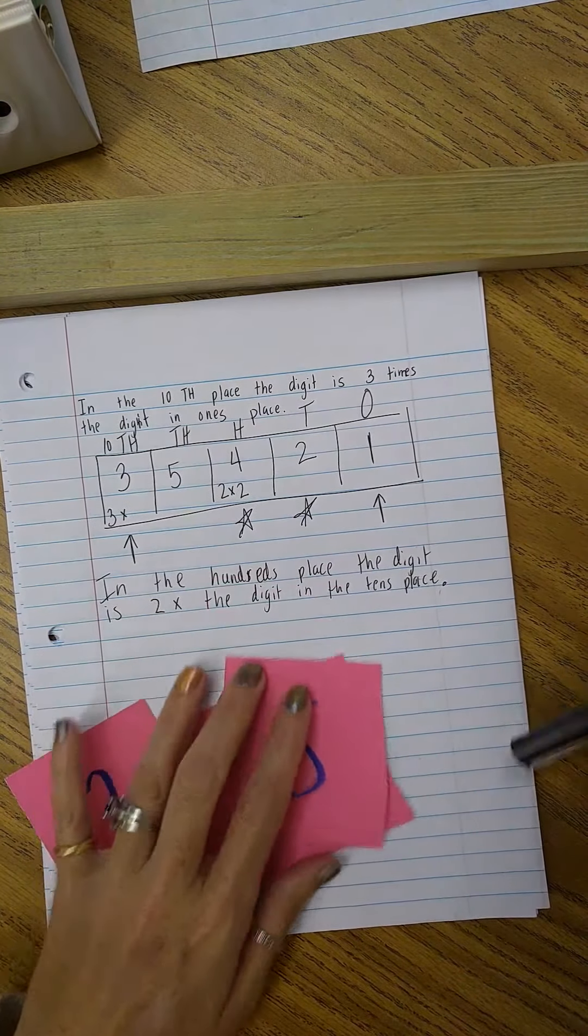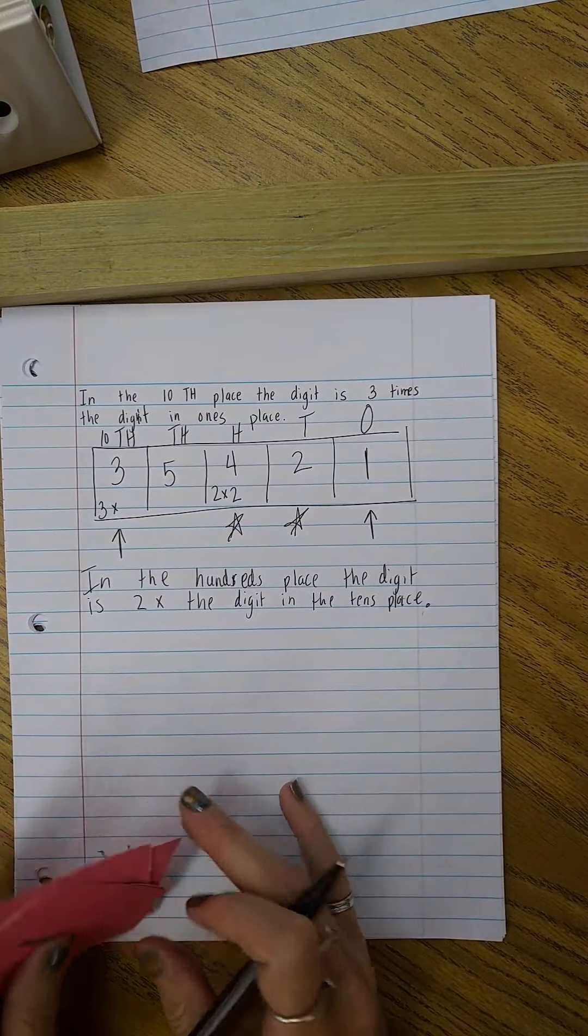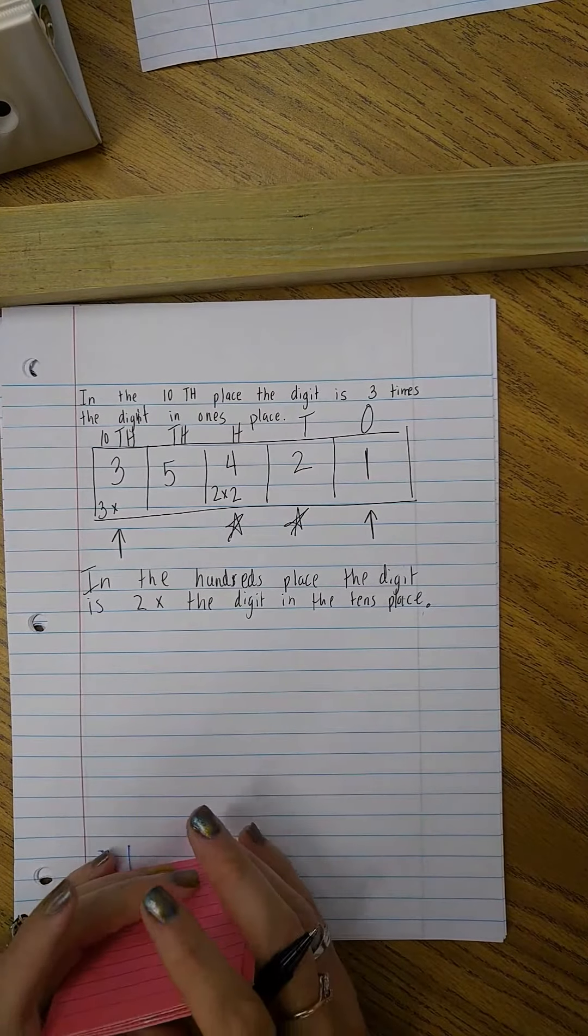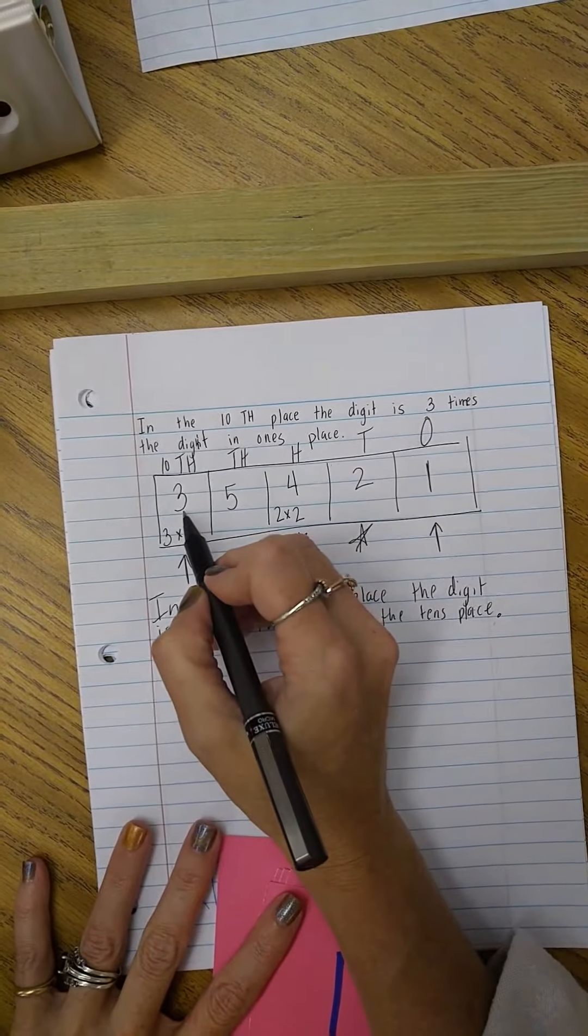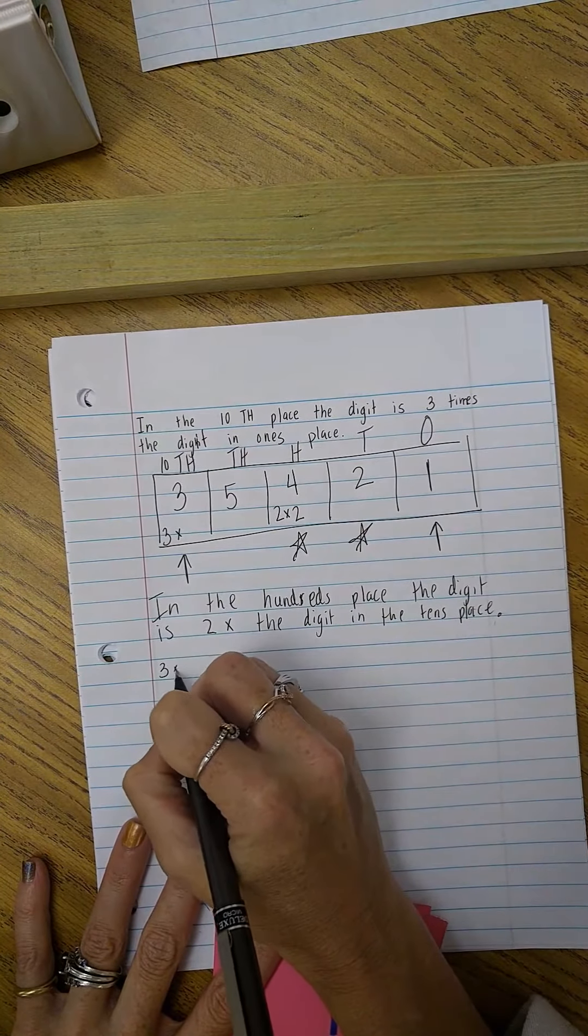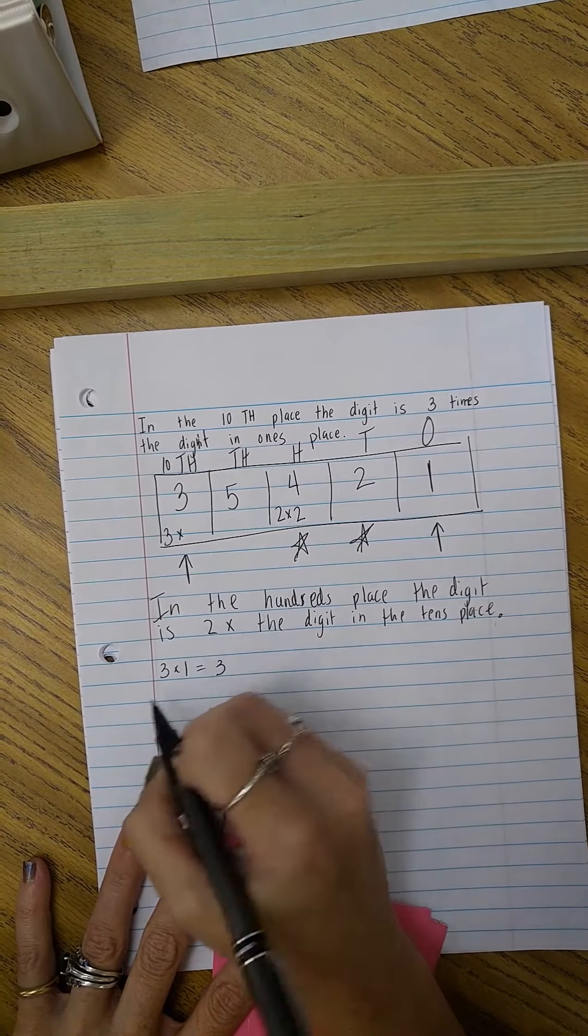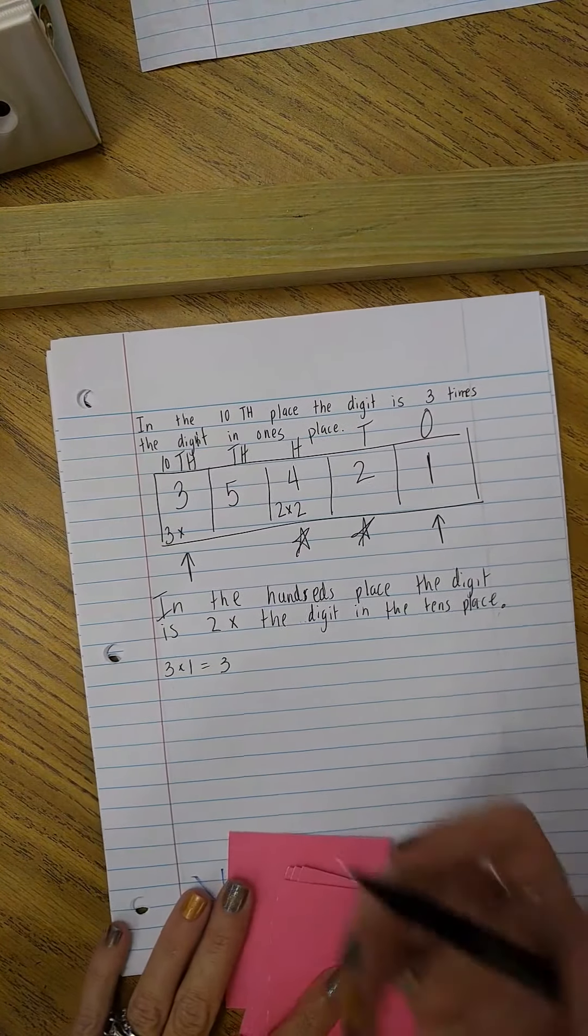So it's very similar to this. That's the example. And they have to explain how they know. Well I know the three goes here because three times one is equal to three, and three and one are both digits that I had available.